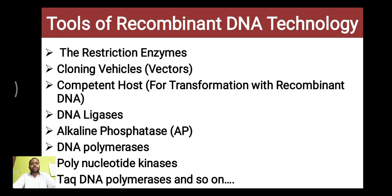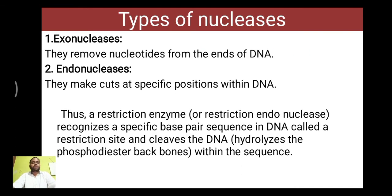Today in this video we are going to concentrate on the restriction enzymes. Let's see what are the types of nucleases. Nucleases are nucleic acid degrading enzymes. There are two types. First is exonuclease — they remove the nucleotides from the ends of DNA, that is the 5' end and 3' end. Endonucleases cut at a very specific position within the DNA. Therefore, endonucleases are also called restriction enzymes. They have a specific restriction site and cleave by breaking the phosphodiester bond present within the sequence.